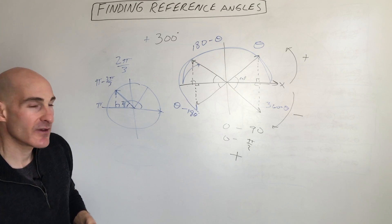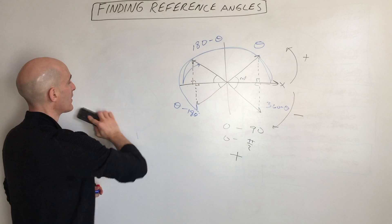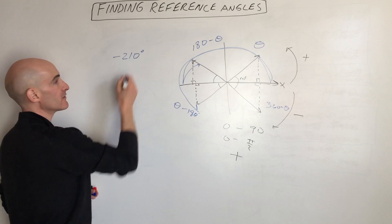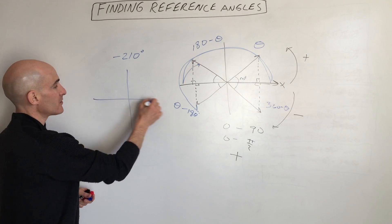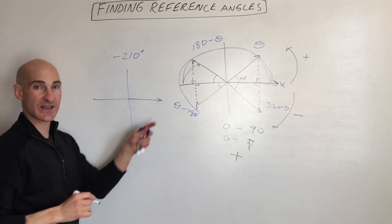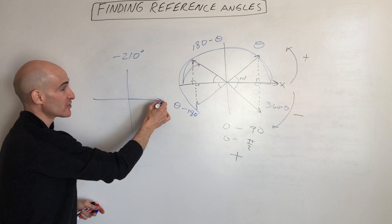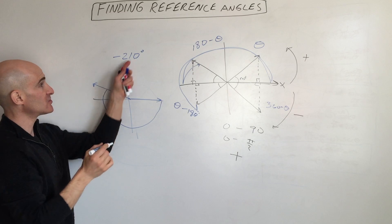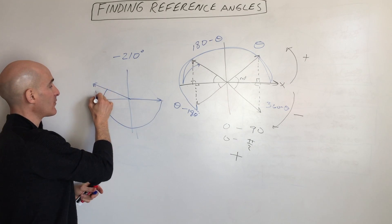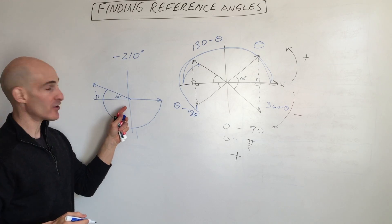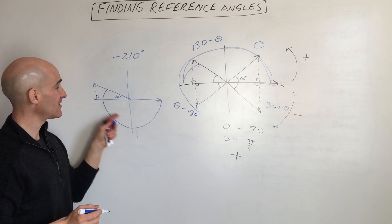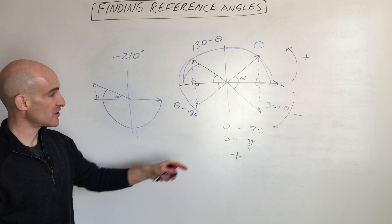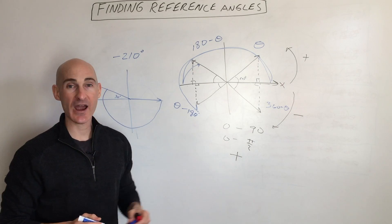Let's do a negative angle. We want to find the reference angle for negative 210 degrees. Starting at the positive x-axis, a negative angle means we go clockwise — 90, 180, then 30 more gets you 210. Drop a perpendicular, and I can see this angle is going to be 30 degrees — it's just 30 degrees past the 180 mark. The reference angle is always positive, so it's positive 30 degrees, between 0 and 90.